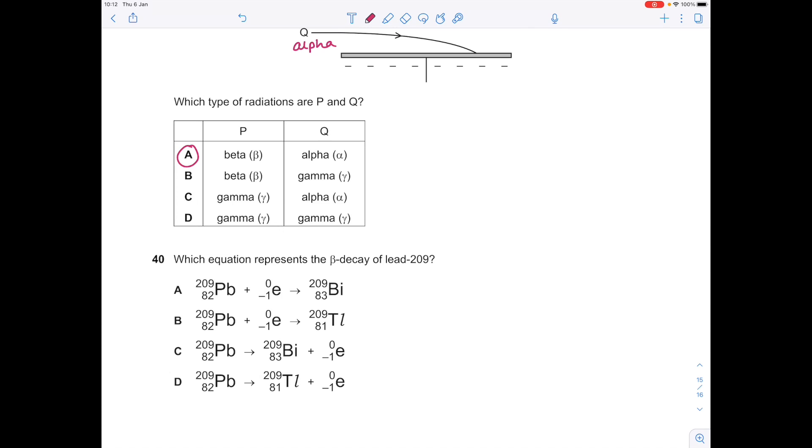Which equation represents the beta decay of lead 209? Remember, with beta decay a neutron turns into a proton and stays within the atom, which means the mass number stays the same but the atomic number goes up by one.